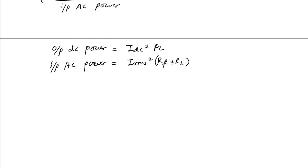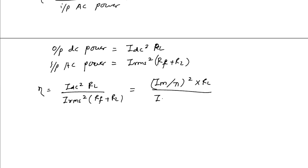Because RMS is - efficiency will equal to IDC square into RL, will be equal to Im by pi whole square into RL divided by Im by 2 whole square into Rf plus RL. This will be canceled, 4 by pi square into RL.